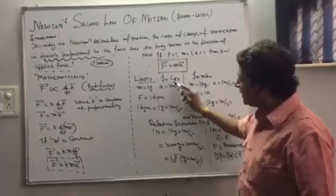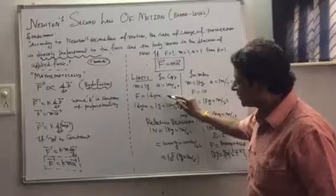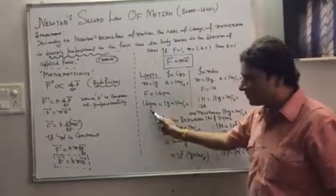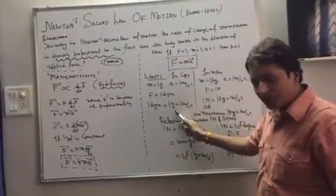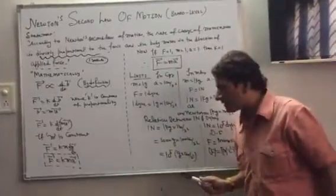In CGS units: mass 1 gram, acceleration 1 cm per second squared, force is 1 dyne. Force is said to be 1 dyne when applied on a mass of 1 gram and produces an acceleration of 1 cm per second squared.